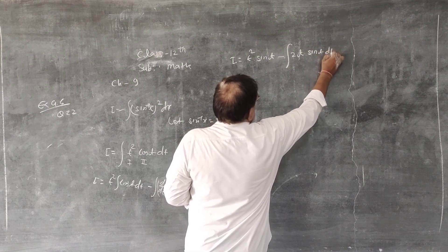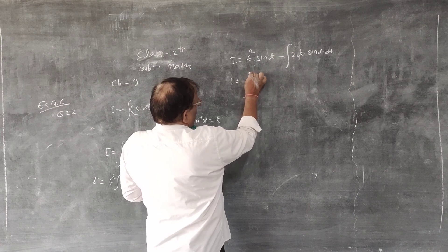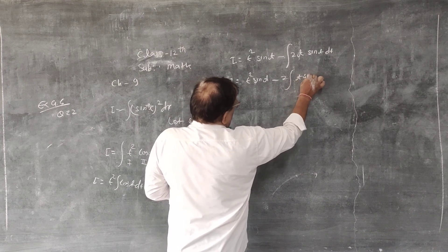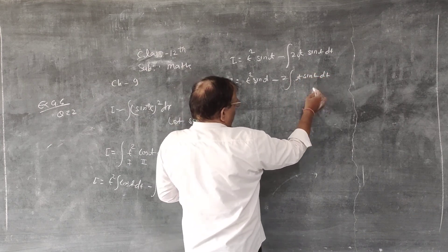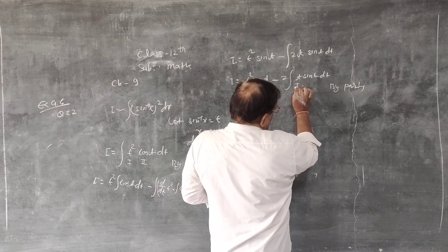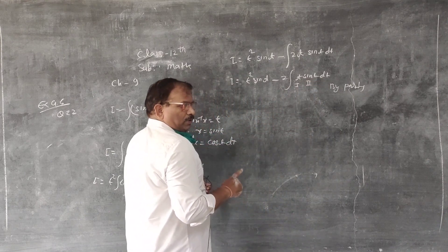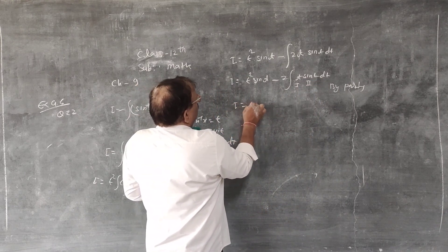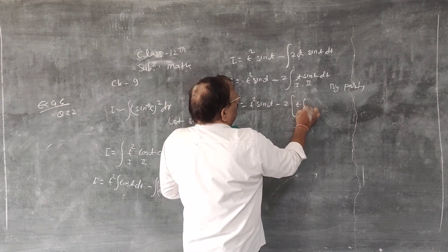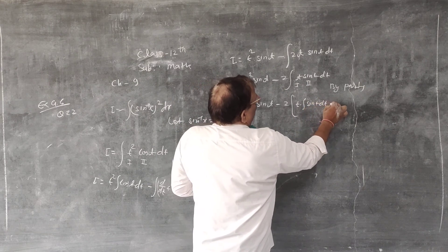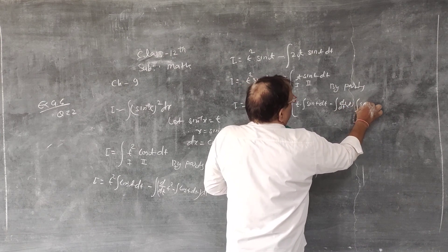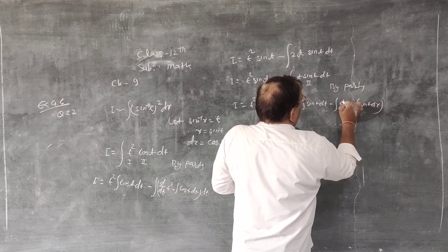So i = t² sin t − 2∫t sin t dt. We need to apply integration by parts again on ∫t sin t dt, taking t as the algebraic first function and sin t as the trigonometric second function.